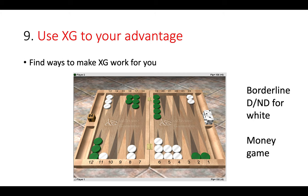Step nine: use XG to your advantage. There is really no substitute for XG, the backgammon software, but use it in ways that work for you. You can check out my other video on getting the most out of XG. In the position shown, this is a borderline double — no double for white in a money game. What adjustments would you need to make to that position to make it a definite double or a definite no double? You can manipulate positions to see different answers, and that's how you get the most out of studying the errors and blunders in your database.